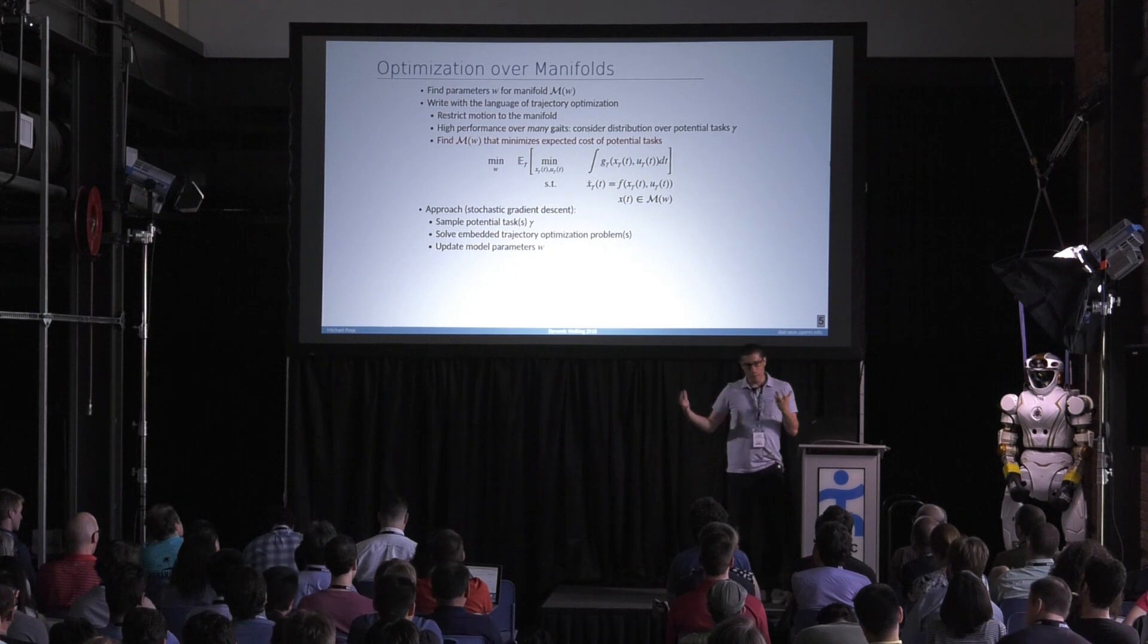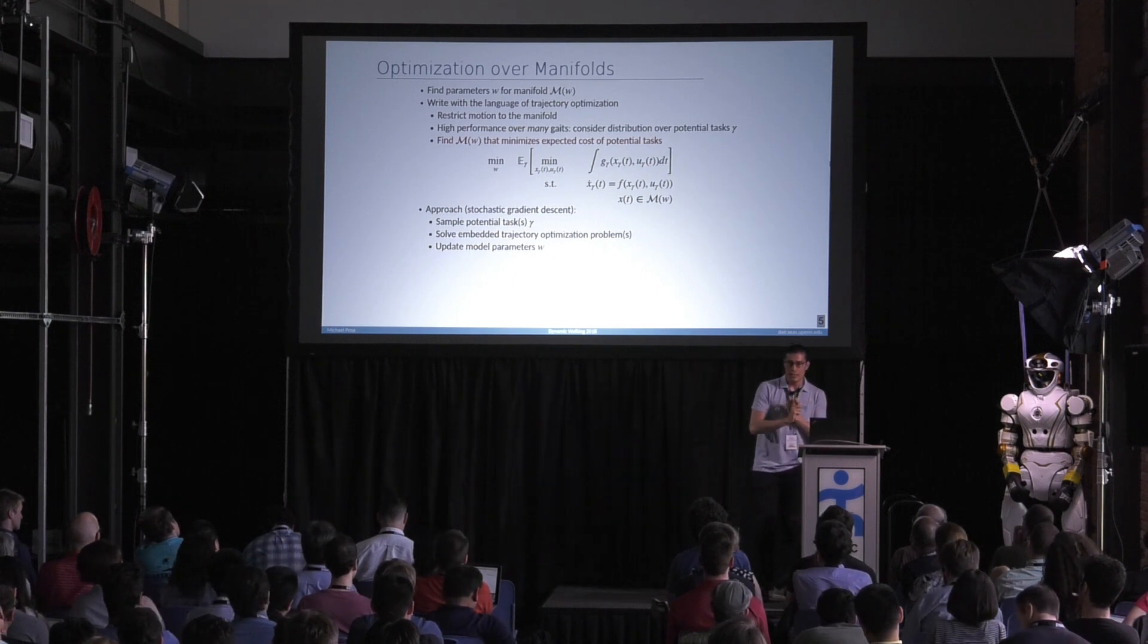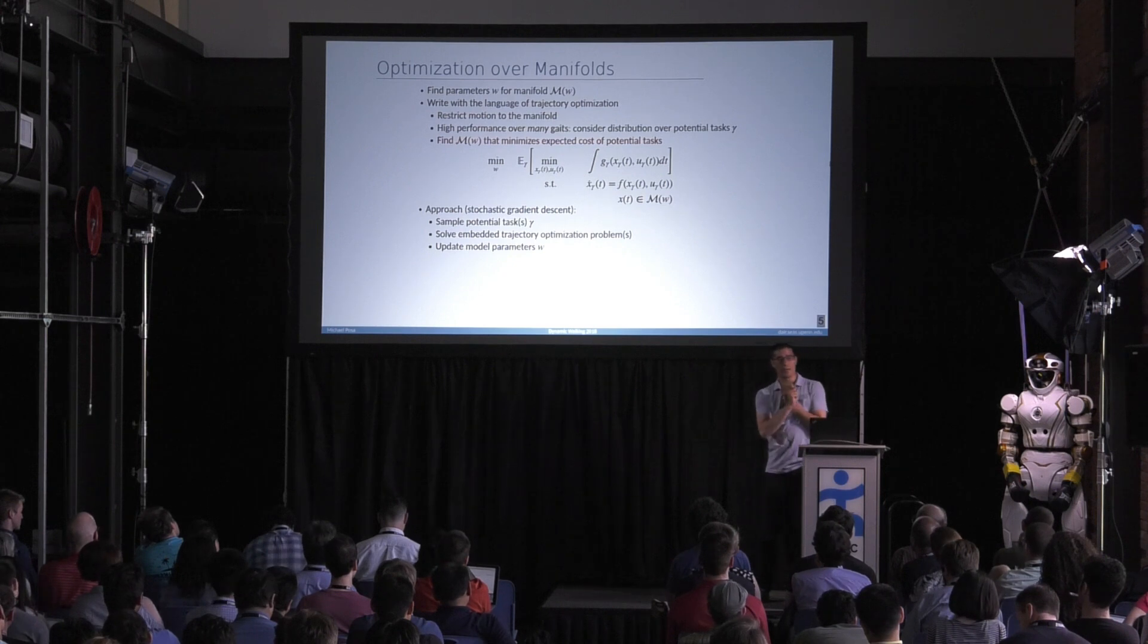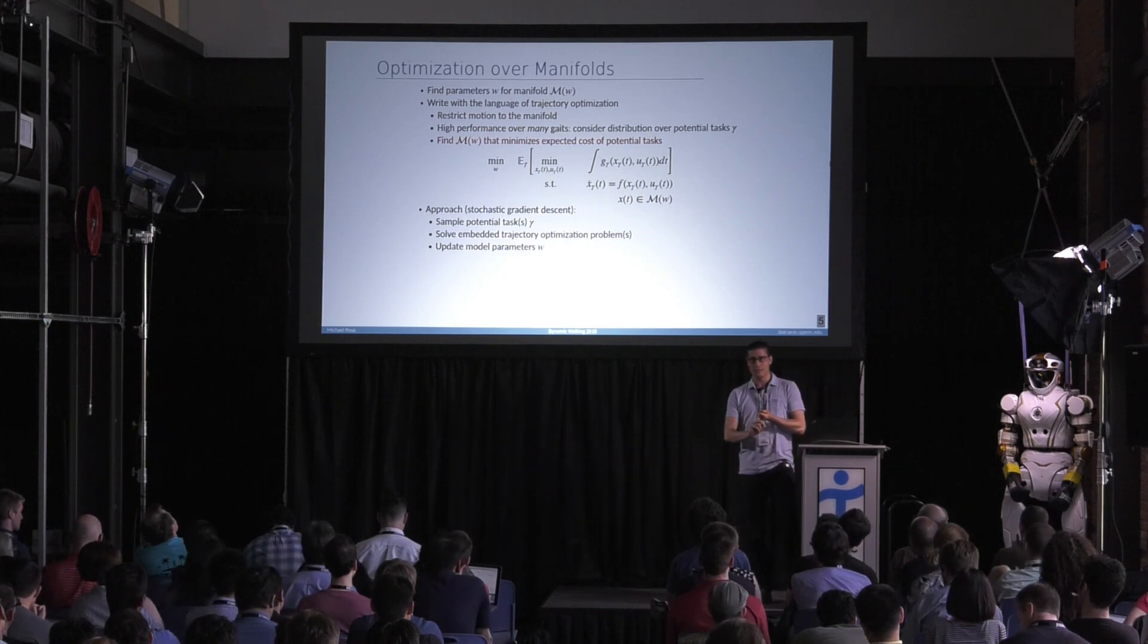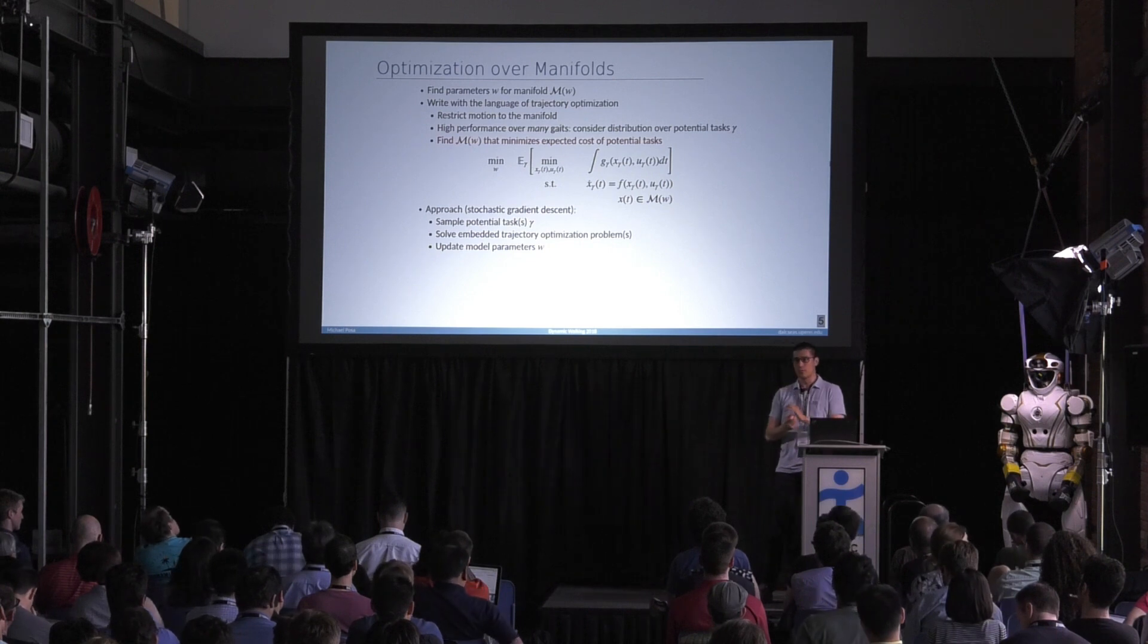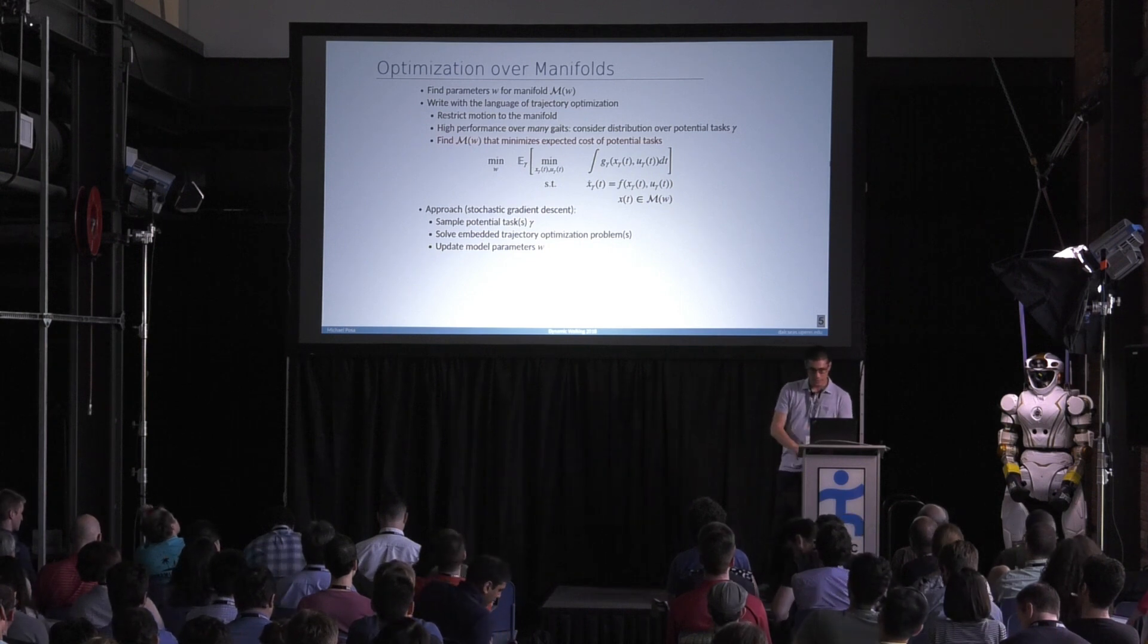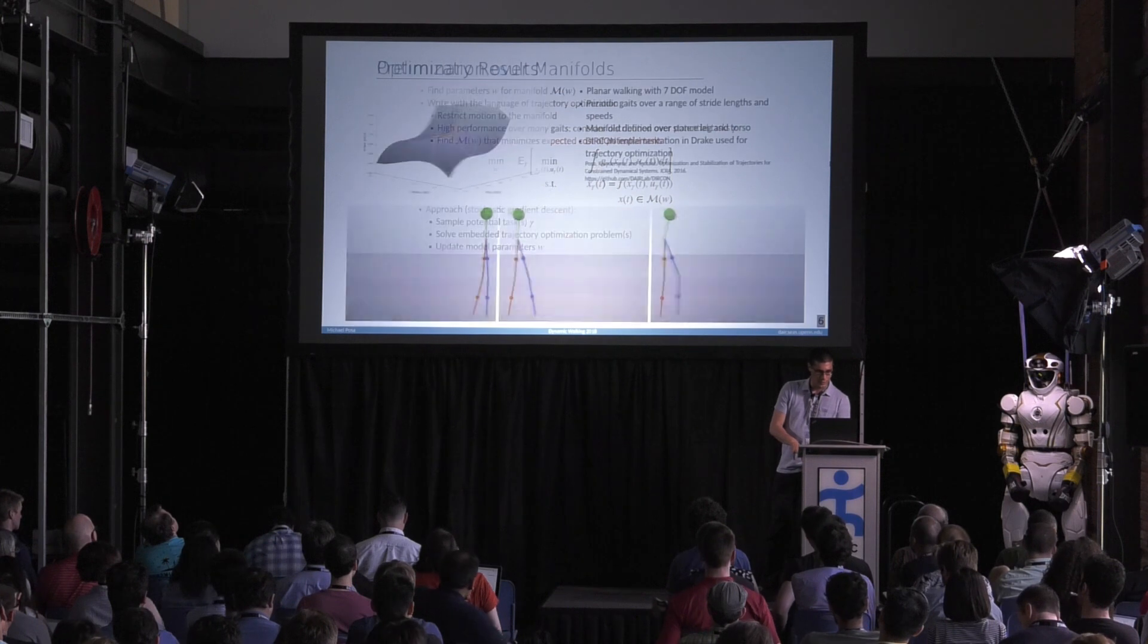And we're looking for this manifold that minimizes, let's say, for instance, expected cost over potential tasks. And we could write down some nasty-looking problem, right? So minimize with respect to our manifold the expected value of some trajectory optimization that's dependent on the particular task that I want to accomplish. Of course, this thing is basically unsolvable. So one approach might be to do something like stochastic gradient descent. So we're going to sample potential things that the robot might have to do, maybe in batches. We're going to solve some trajectory optimization problems, and we're going to take gradient descent steps and repeat. Now, of course, there's a lot of places you could complain about this idea, right? So what does the distribution look like? I don't know is the answer. I mean, we could think about sampling those from real-world experiments. Whenever our footstep planner tells us the robot should do something, there's a sample of a task. But there's a lot of directions you could take this concept.